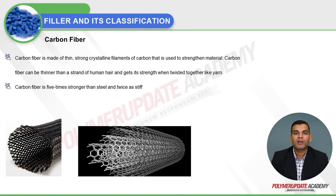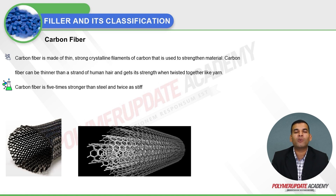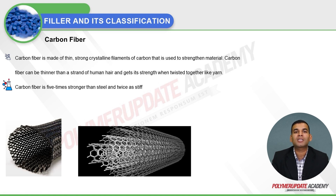Carbon fiber is made up of thin, strong crystalline filaments of carbon used to strengthen materials. Carbon fiber can be thinner than a strand of human hair and gets its strength when twisted together like a yarn. Carbon fiber is five times stronger than steel and twice as stiff.